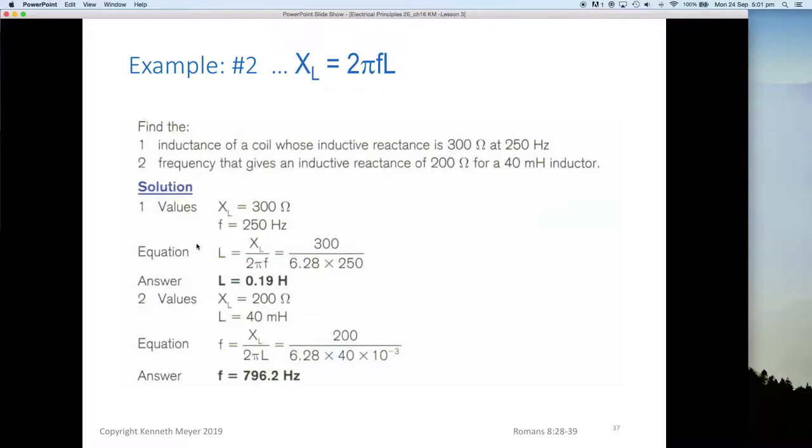It's a matter of transposing our equations. If we want to move L to the outside of the formula, it's simply a matter of taking the 2πfL and dividing both sides of the equation by 2πf, which means L will equal XL divided by 2πf. Giving us 300 divided by 6.28 multiplied by 250. Our L is 0.19 henrys, or you could express that as 190 millihenrys.